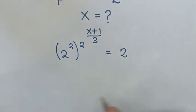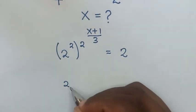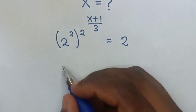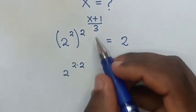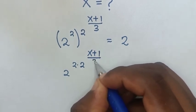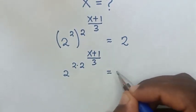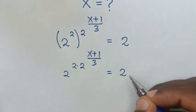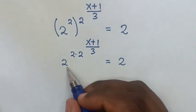Then our equation will be 2 to the power of (2 times 2) to the power of (x+1)/3 equals 2. Then because here we have the same base of 2,